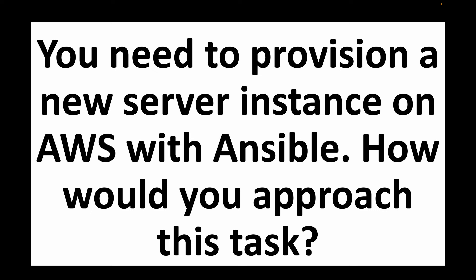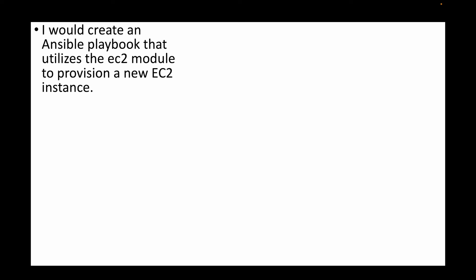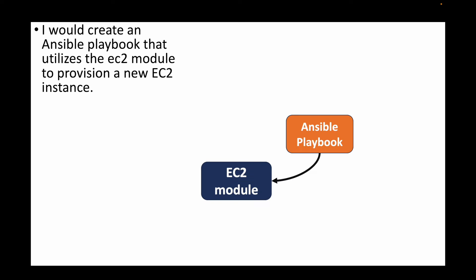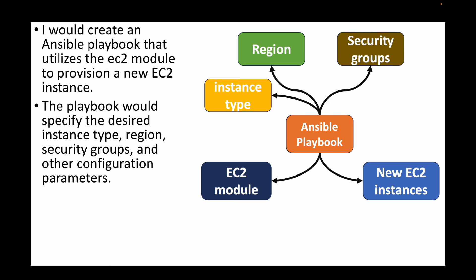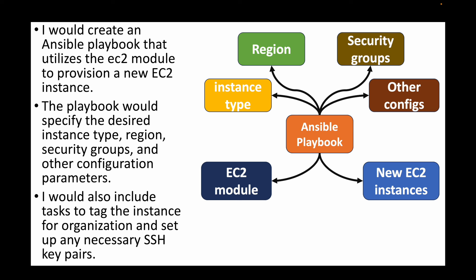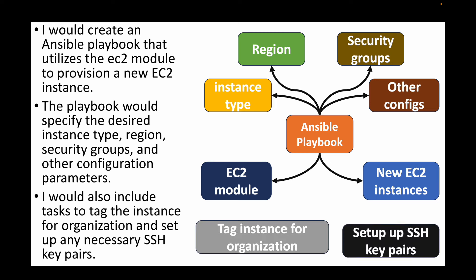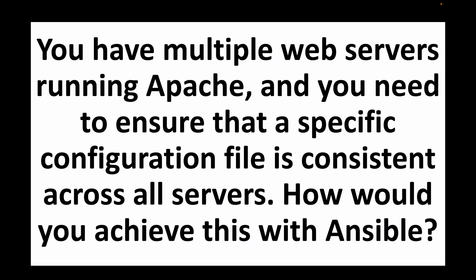The first question: you need to provision a new server instance on AWS with Ansible — how would you approach this task? We can create an Ansible playbook using the EC2 module to launch EC2 instances. In this playbook we specify the instance type, region, security groups, and other configuration parameters. We can also include tasks to tag the instance and set up SSH key pairs to connect to the EC2 instance.